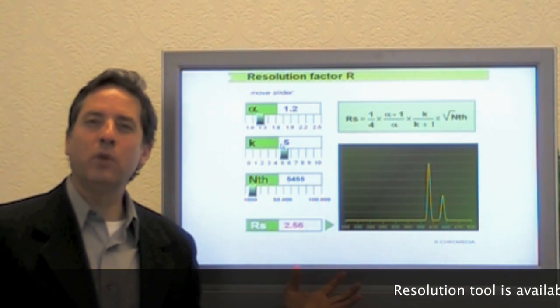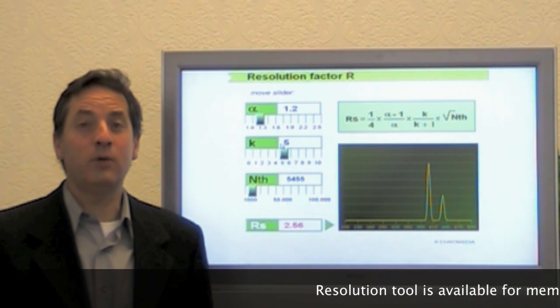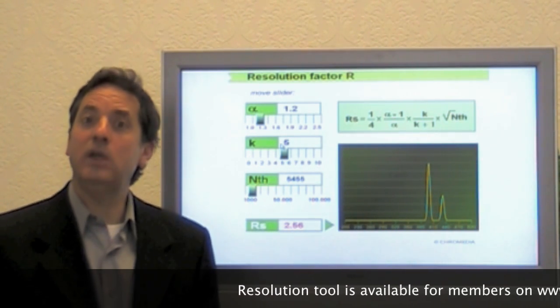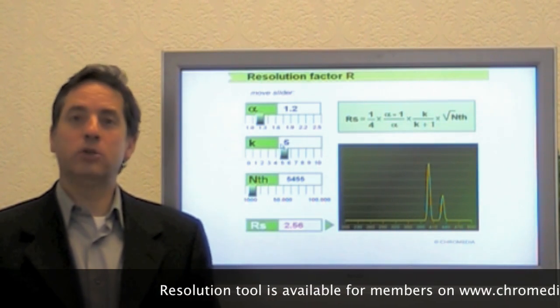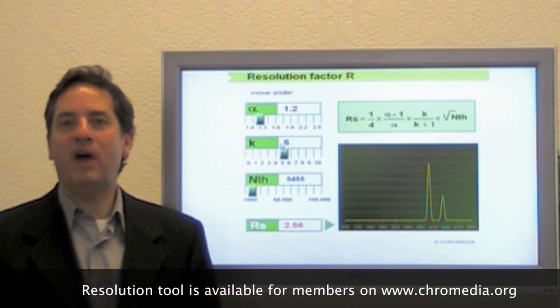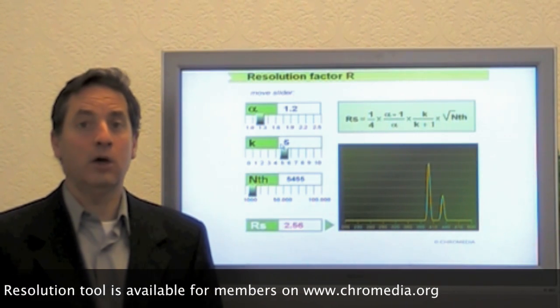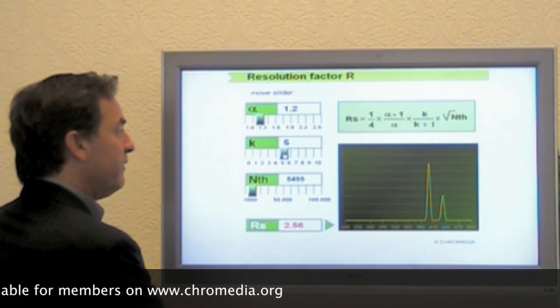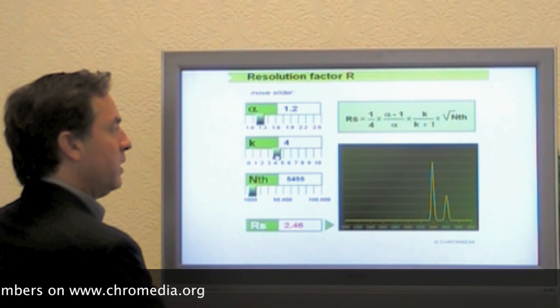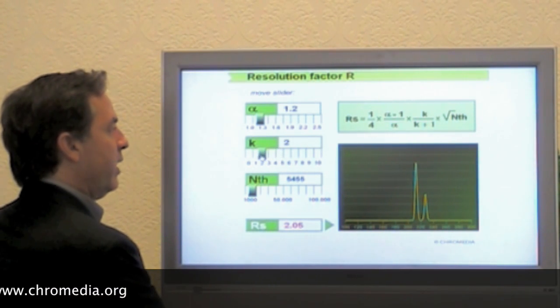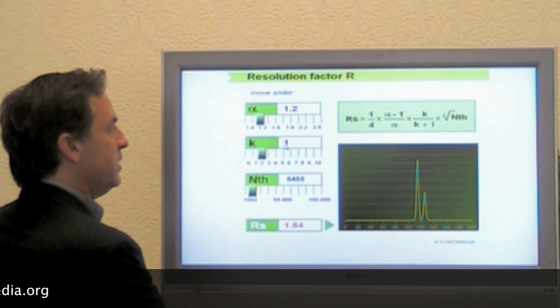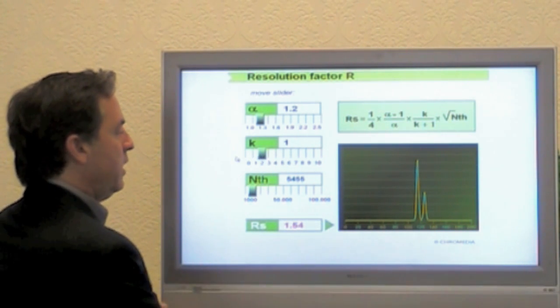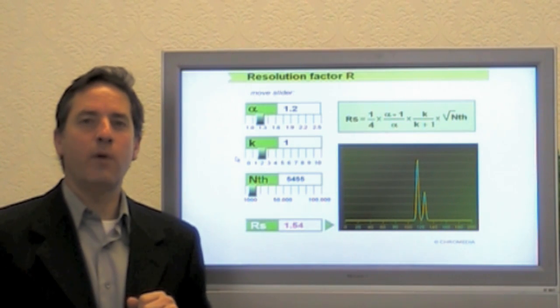So again, a great tool that you can use to help figure out what column dimensions you need or what parameters you need to change or affect in order to get a good resolution. In this case, if I wanted to know how little capacity factor was required and still maintain good resolution, this says a capacity factor of 1 would still give me resolution 1.54.